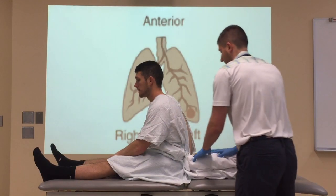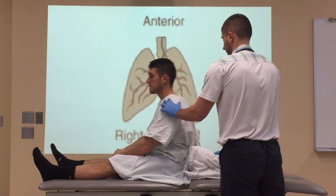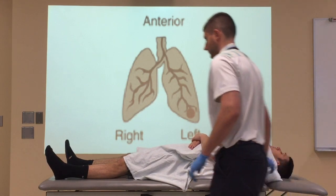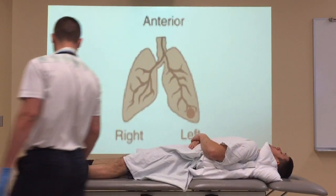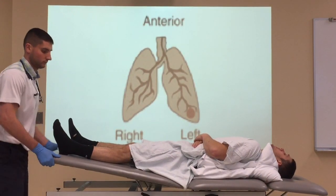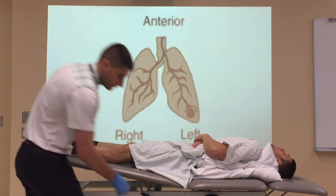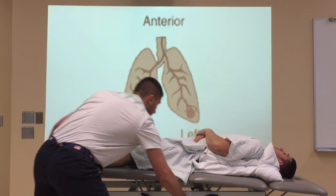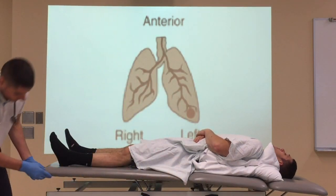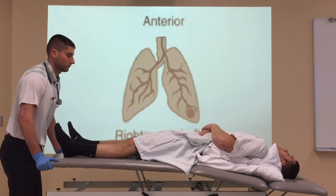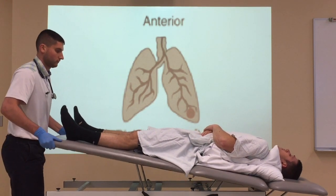For the left lingular, your patient should be positioned supine with pillows propping up the left side of the trunk. The table should still be positioned in 12 inches of Trendelenburg. To reduce the risk of aspiration, patients should refrain from eating at least 30 to 60 minutes prior to treatment, or treatment should be scheduled prior to meals.